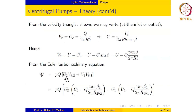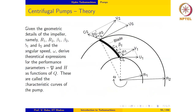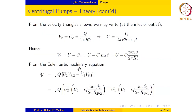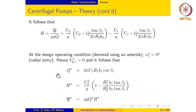From the Euler turbomachinery equation, power P = ρQ(u₂·vθ₂ − u₁·vθ₁). Substituting for vθ₂ = u₂ − Q·tanβ₂ / (2πr₂b₂) and similarly for vθ₁, we get the power expression. Dividing by ρgQ gives the head H = P / (ρgQ), yielding the theoretical head generated by the impeller as a function of Q.